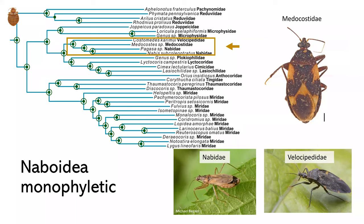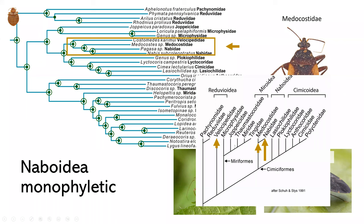Then looking at Naboidea, we included Velocipedidae and Medocostidae, which we were really excited about, and confirmed monophyly of this group, which does not agree with the Schuh and Stys hypothesis.